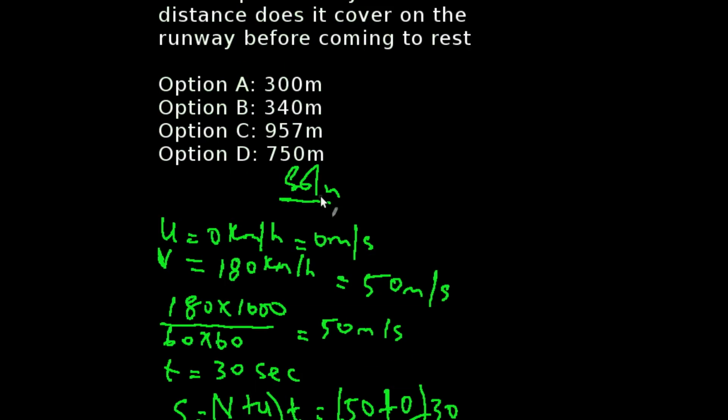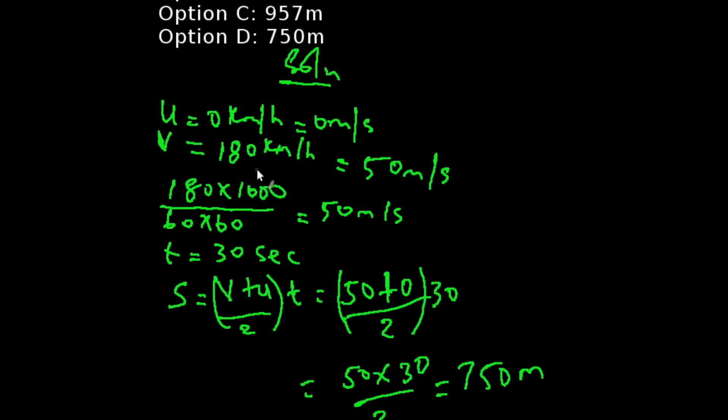For us to solve this problem, let's look at the parameters that we have been given. We have our initial velocity U to be 0 kilometers per hour, that's 0 meters per second. We have our final velocity to be 180 kilometers per hour and that will give us 50 meters per second. A simple way to convert that is 180 times 1000 all over 60 times 60. Our time is 30 seconds.